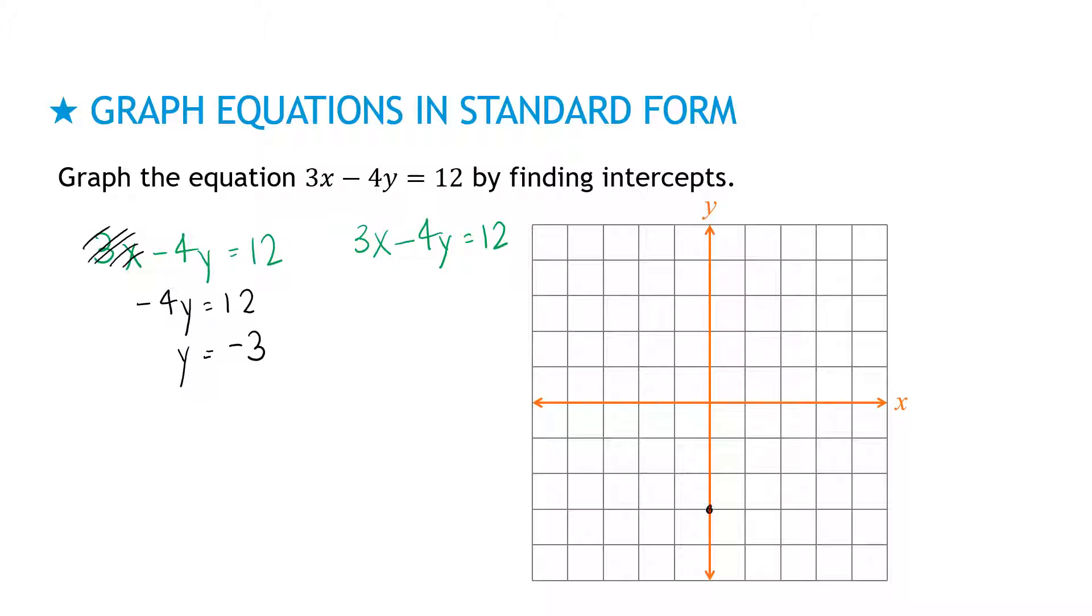For my other one, I'm covering up minus 4y. So I get 3x equals 12, which means x equals 4. Again, I don't actually have to show any of that work. Then just connect the dots to get a nice straight line, and I'm done. The important thing to remember here is that minus stays with the 4, and that's how we get the negative here.